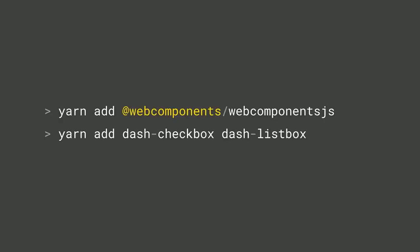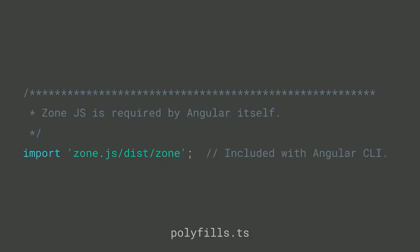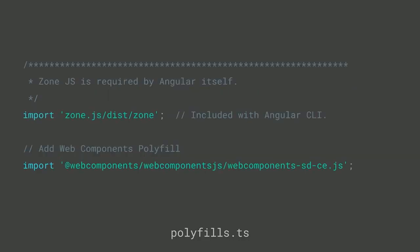Now that I have a standard Angular project, I'll add the polyfills needed to work with web components. We've released these tools on NPM, so I can run yarn add @webcomponents/webcomponentsjs. Then for our project we'll add two specific components: dash-checkbox and dash-listbox. Within the Angular project, I'll find the polyfills.ts file, which has a built-in tutorial for what polyfills to include based on your browser targets. Right below the import for zone.js, I'll add the web components polyfill.